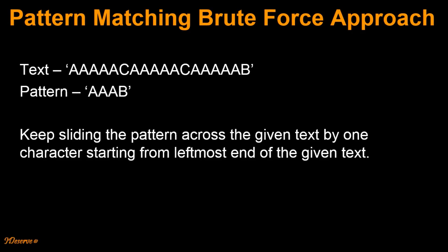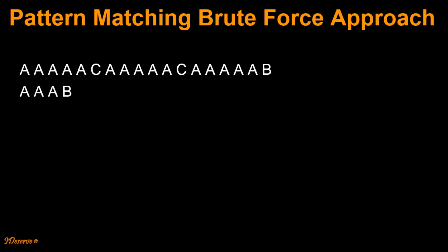In this naive approach, what we do is we keep sliding the pattern across the given text one character at a time, starting from the leftmost end of the given text. For example, for this given text and this pattern, we start matching the pattern to the text from the leftmost end. All the characters of the pattern except the character B match with the text. Once we see the mismatch, we right shift this pattern by one character. Again, all the characters from the pattern except the character B match, and therefore we again right shift this pattern by one character. We keep doing this until the match is found or all the characters from the text are exhausted. At the very end of the text, there is a match for the pattern.